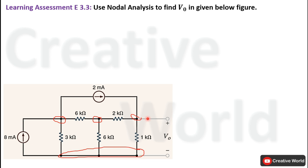Nodal Analysis will be applied on the remaining three nodes to calculate voltage V0. The number of node equations in any scenario will be equal to the number of nodes excluding the reference or ground node. In our case, there will be three node equations with respect to these three nodes.